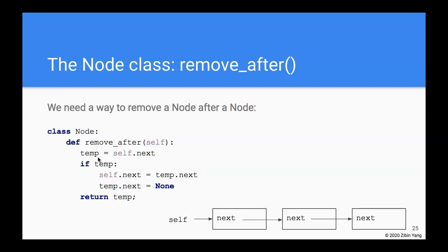So the first thing it does is it assigns self.next to a temporary pointer, so self.next is pointing to the second node in this chain here and now temp is pointing to it. So if temp—and in this case obviously temp is pointing to a node so this is true—then it assigns what temp.next is pointing to, which is this node, to self.next.